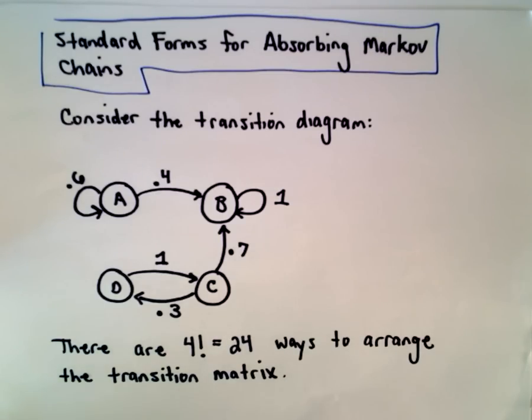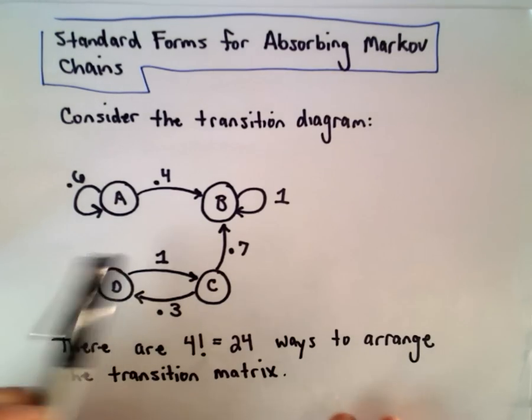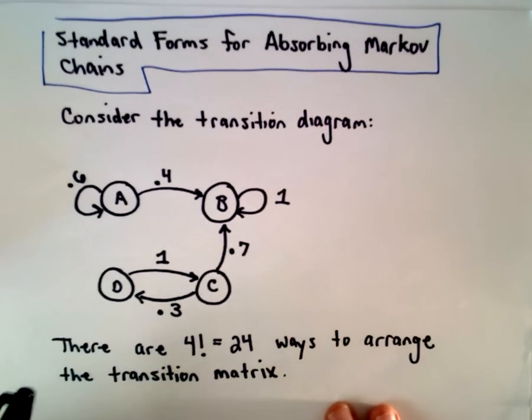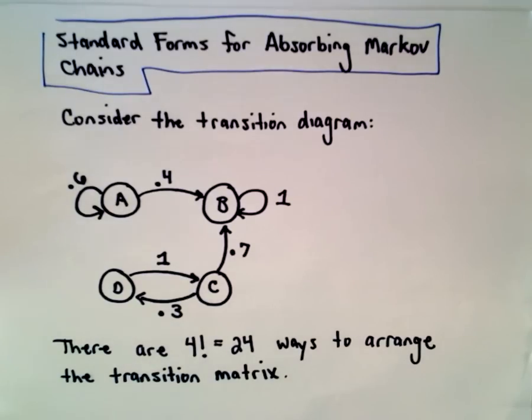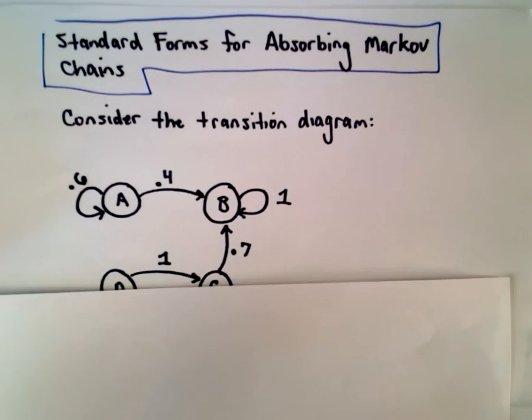So suppose we've got a transition diagram like I have here. We've got A, B, C, and D, four states. It actually turns out that there would be 24 ways to arrange this transition matrix. I mean, up till now,